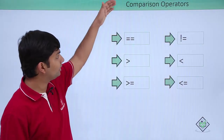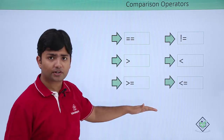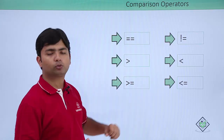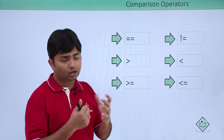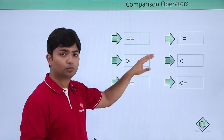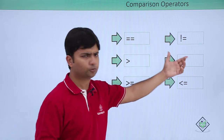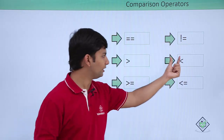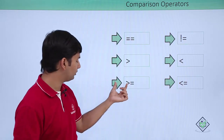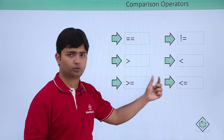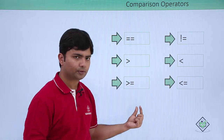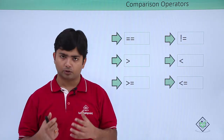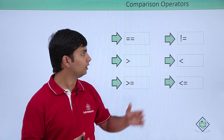Now let's look at the comparison operators. We have six operators for comparing values: double equals-to is the comparison operator which compares whether two values are equal or not — if equal it returns true, otherwise false. The opposite is the not-equals-to operator. Greater than and less than compare which value is larger or smaller, and similarly greater-than-equals-to and less-than-equals-to compare both greater-than and equality. All these operators always return a boolean — either true or false.